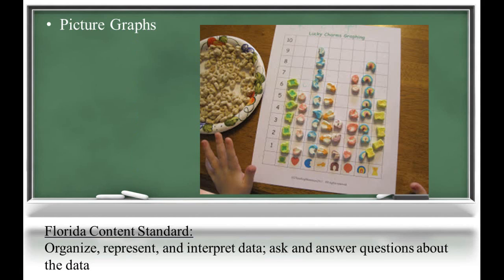As students begin to work with picture graphs, they can use real-life objects in a variety of different symbols to represent the categories. Here, a child has graphed the different types of marshmallows found in Lucky Charms. Each symbol represents a different marshmallow that is placed in a square so that comparisons and counts are easily made.